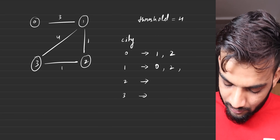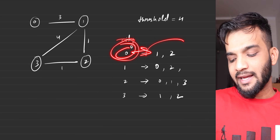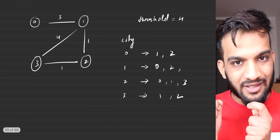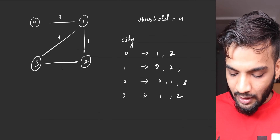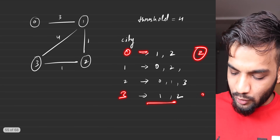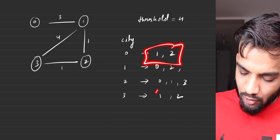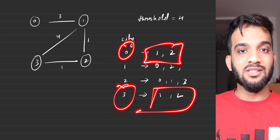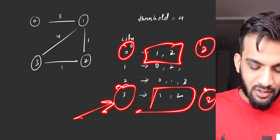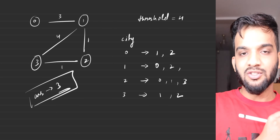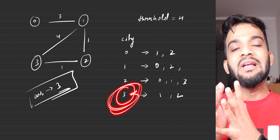Similarly we can figure out for cities 2 and 3. For city 2 it's 0, 1, 3 and for city 3 it is 1, 2. So for every city I've figured out which cities I can travel to within the threshold distance. We can see two cities have the lowest count — from 0 I can travel to 2 cities, and from 3 I can also travel to 2 cities. From 1 and 2 you can travel to 3 cities. If there are multiple options, you choose the largest city number, which is 3. So your answer is 3.